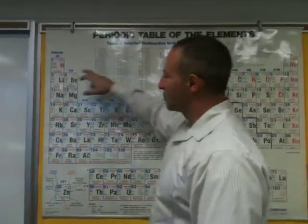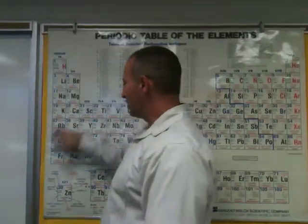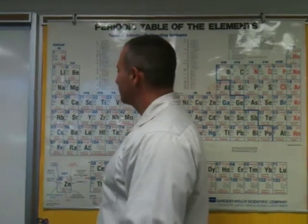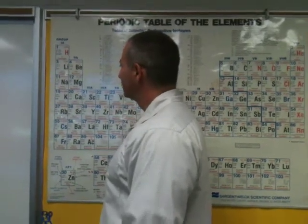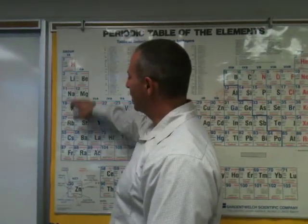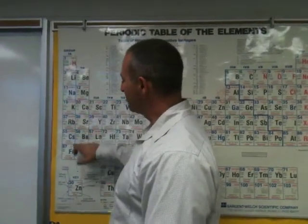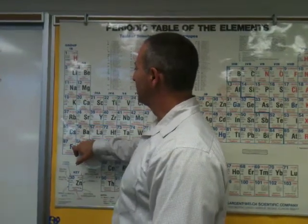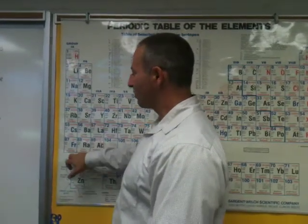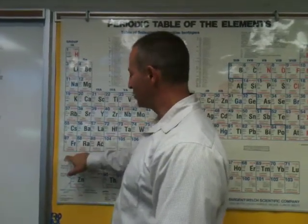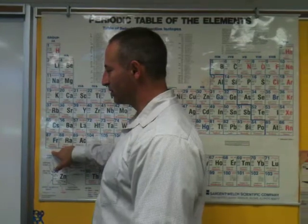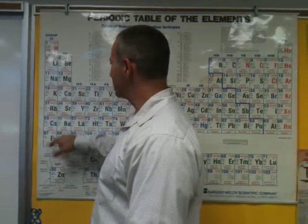The first group is called the alkali metals, and the way we memorize that is H-Li-Na-K, Rubidium, Caesium, Francium. They like to form a +1 charge — you can write that when you do your test or quiz.